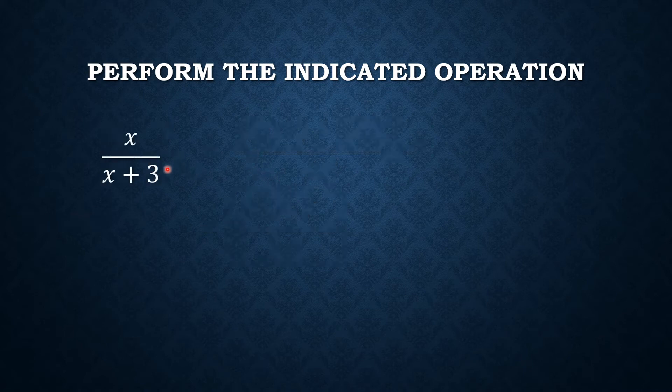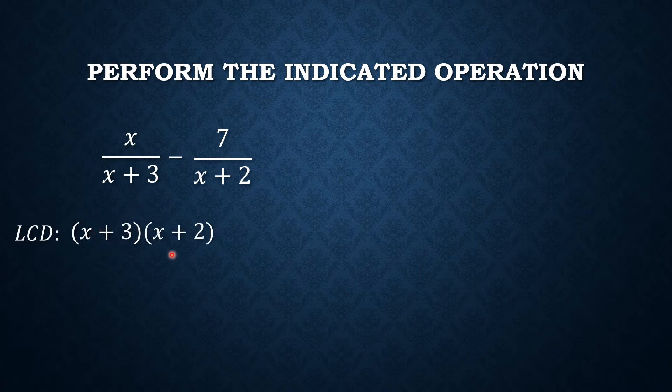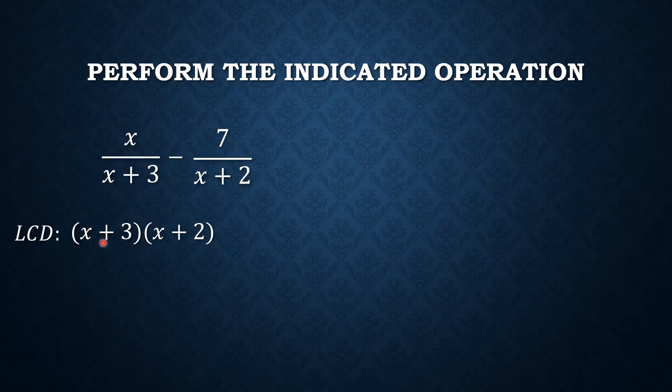Next, x over x plus 3 minus 7 over x plus 2. So again, we need to find the LCD and that gives us x plus 3 and x plus 2, or x plus 3 times x plus 2 because x plus 3 has no other factors and x plus 2 has no other factors either. So we just simply multiply them and that gives us our LCD.